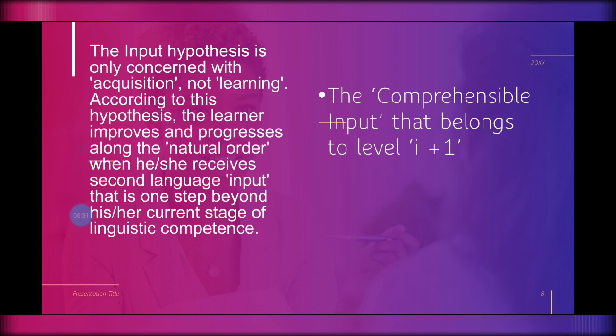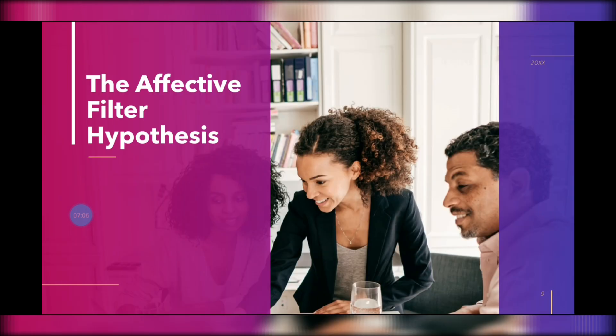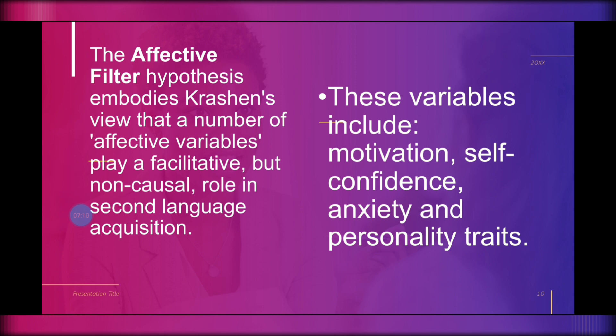The major concept here is comprehensible input at level I+1, where I is the current input and plus one is the next language added. For example, if your first language is Pangasinan — acquired through use of the dialect at home — and you are then exposed to family members who use Filipino, Filipino becomes the second language you acquired. Moving on, we have the Affective Filter Hypothesis, which embodies Krashen's view that a number of affective variables play a facilitative but non-causal role in second language acquisition.